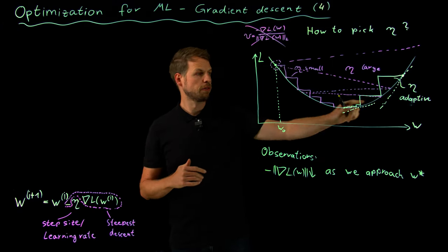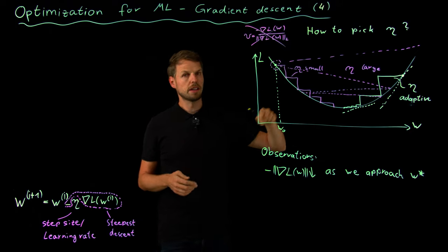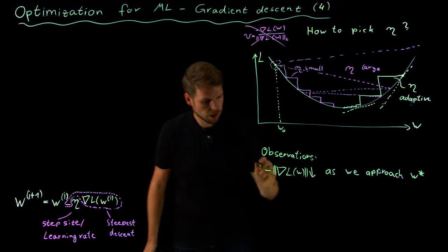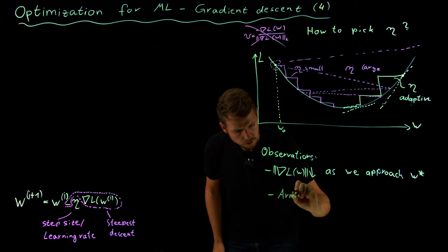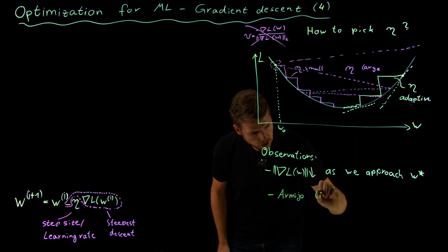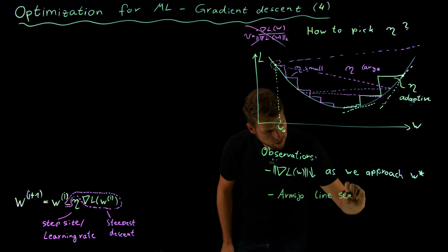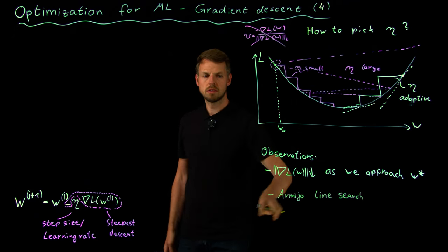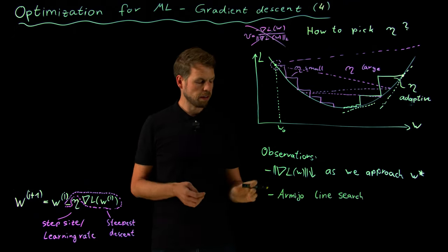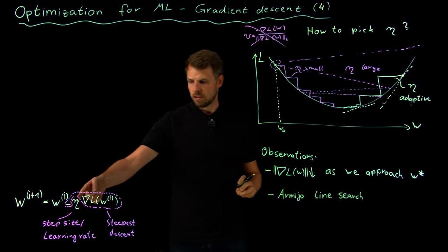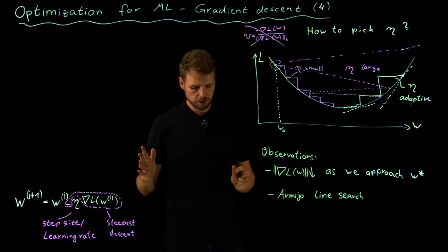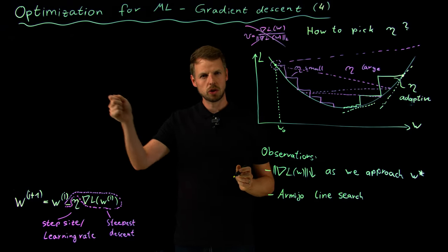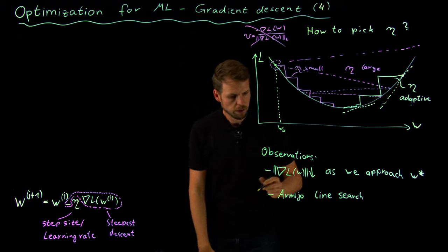For adaptivity, one thing that is very helpful and often used is what is called an Armijo line search. Armijo is the researcher to which this idea dates back, and line search means: once I have set my gradient and have a direction in which I'm already moving, I'm just asking myself how far should I go in the direction of the gradient.